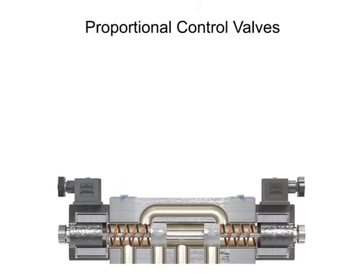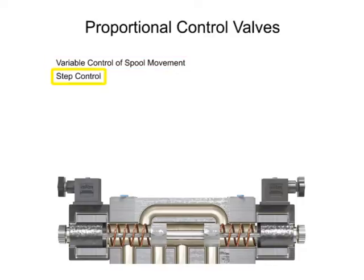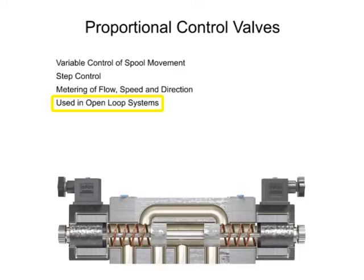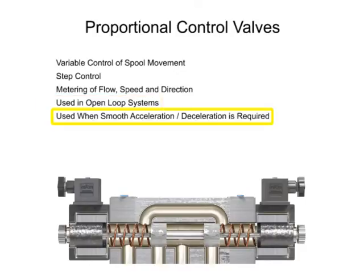Proportional control valves allow for variable control of spool movement, which allows more precise control and metering of flow, speed, and direction. Most valves of this design are used in open-loop systems to smoothly accelerate and/or decelerate an actuator or cylinder.